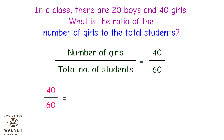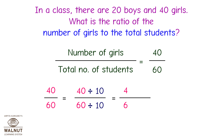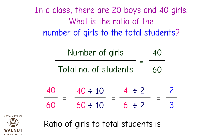We can keep reducing this fraction as long as there are common factors. We divide the numerator and denominator by 10 and we get 4 upon 6. Then we divide the numerator and denominator by 2 and we get 2 upon 3. As we cannot divide this fraction further, this is our final answer. So the ratio of the number of girls to the total number of students is 2 is to 3.